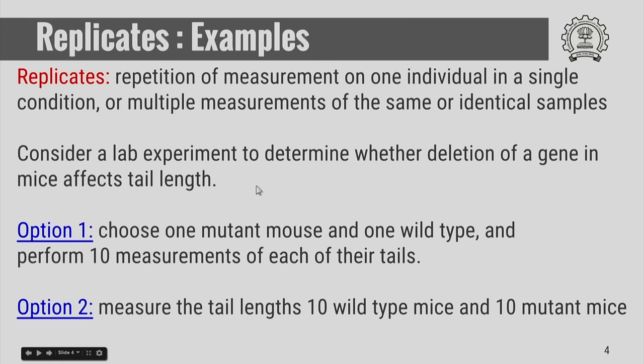It is also very important that the sample size n, which is the number of independent results, is carefully distinguished from the number of replicates. Replicates are the repetition of measurement on one individual in a single condition, or multiple measurements of the same or identical samples.